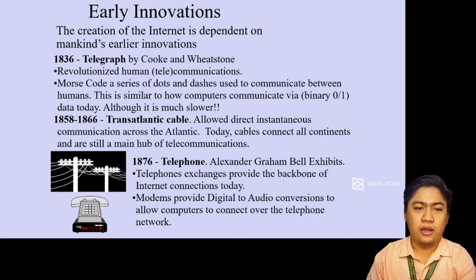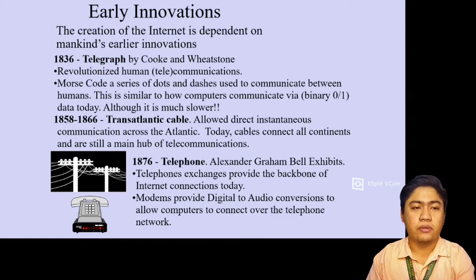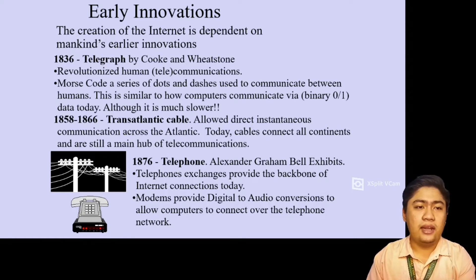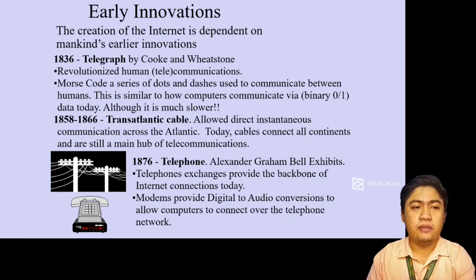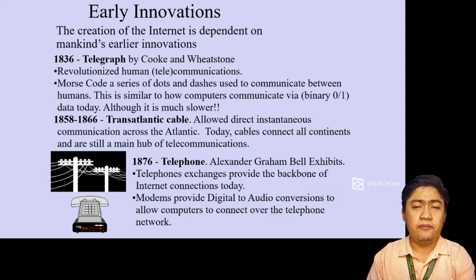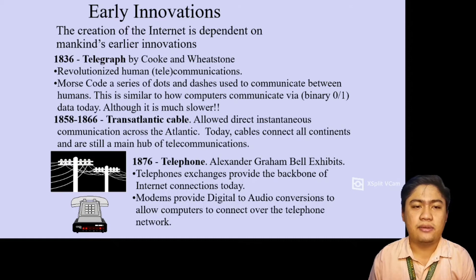The creation of the internet is dependent on mankind's earlier innovations. In 1836, the telegraph was invented by Cooke and Wheatstone, revolutionizing human telecommunication. The telegraph used Morse code — a series of dots and dashes used to communicate between humans. This is similar to how computers communicate via binary, which is ones and zeros.